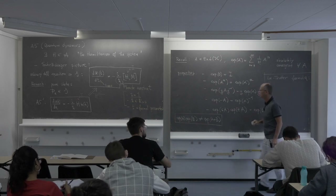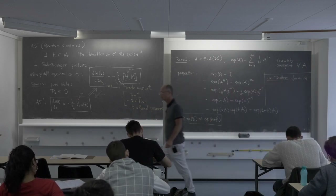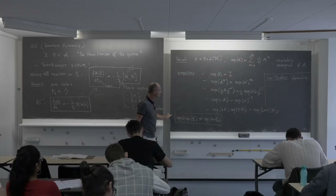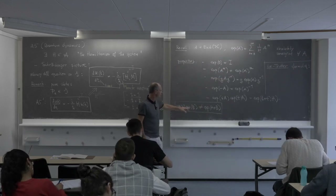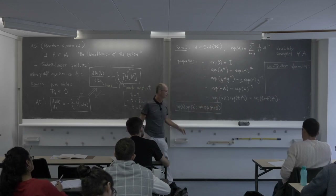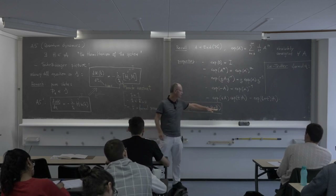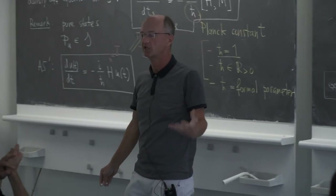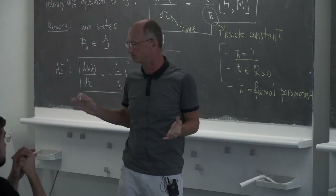One formula we will use later in the course is the Lie–Trotter formula. It says: lim_{n→∞} (exp(A/n) exp(B/n))^n = exp(A+B). You first divide, multiply, take the nth power, then send n to infinity. The proof is a mix of first-year calculus and linear algebra.